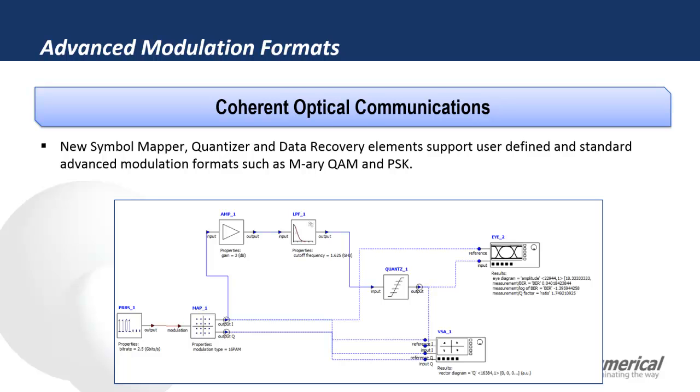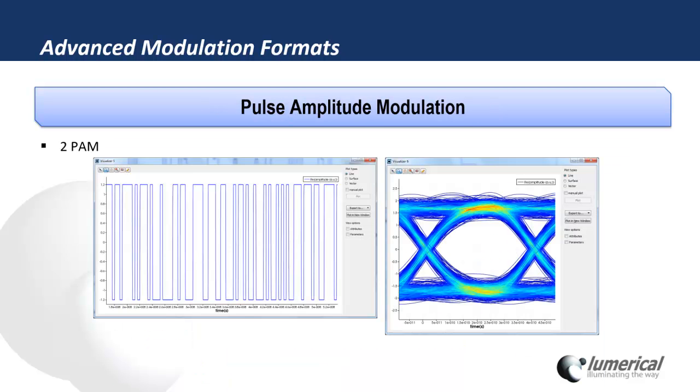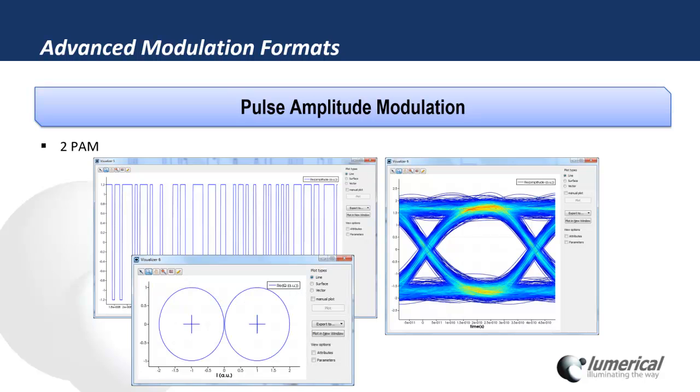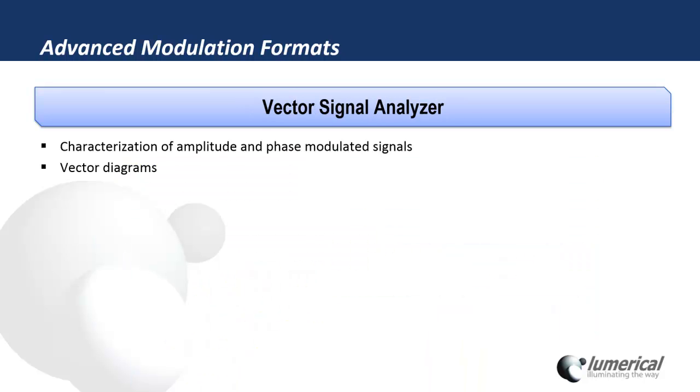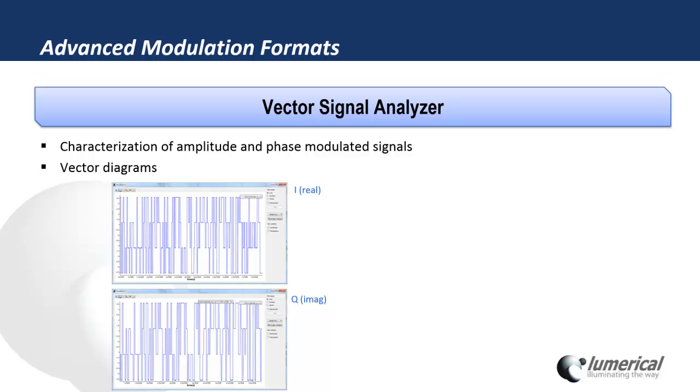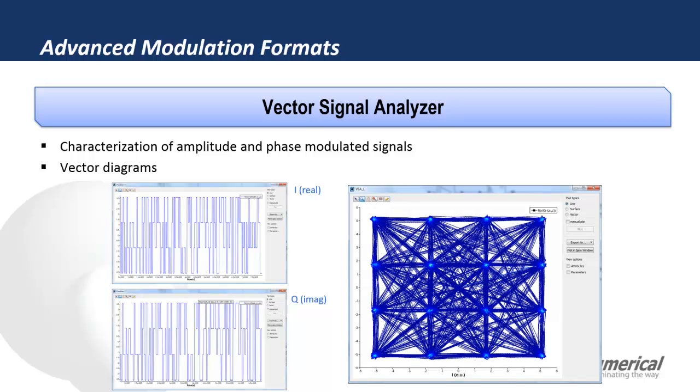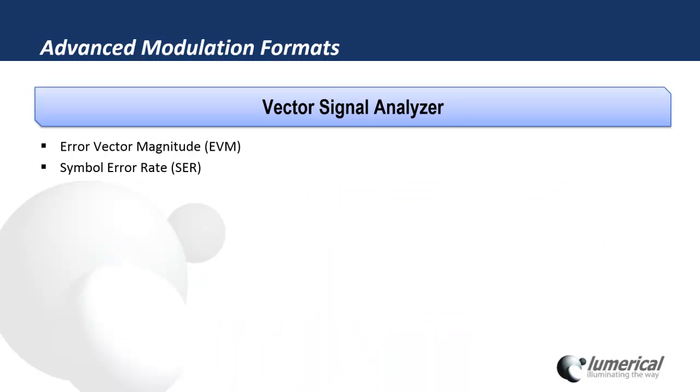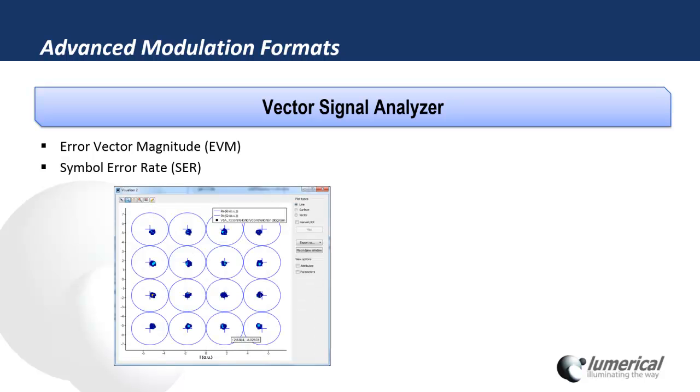The I-diagram analyzer in earlier versions of InterConnect was sufficient for analyzing simple modulation schemes, but is not sufficient for these more advanced schemes. In InterConnect 4, the Vector Signal Analyzer allows for the characterization of amplitude and phase modulated signals, as we see here. We're also able to extract a number of standard signal quality metrics.